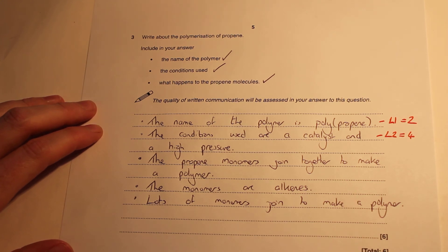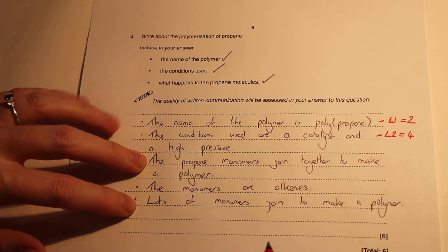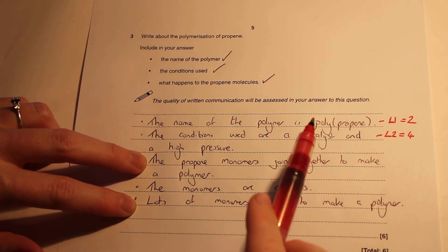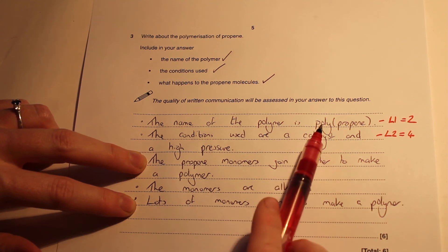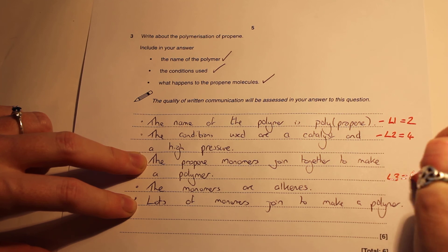Finally, to get our top six marks for the level three answer, we would have to name polypropene, name one or both conditions—you don't need both for top marks—and give a complete description of polymerization. That doesn't mean you've got to have literally all three points. As long as you've got the top one and bottom one along with at least one condition and the name polypropene, we get our level three answer, which is six marks.